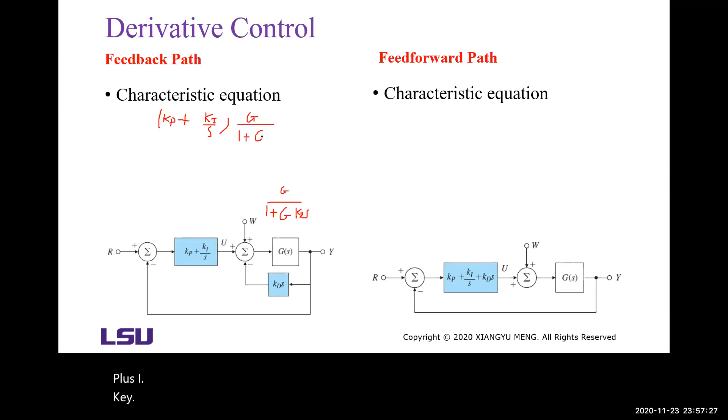So let me write it again. It's G over 1 plus G KD S times Kp plus KI over S, divided by 1 plus this block. Then we multiply S times 1 plus G KD S. So we have S Kp plus KI times G over S times 1 plus G KD S plus S Kp plus KI times G.